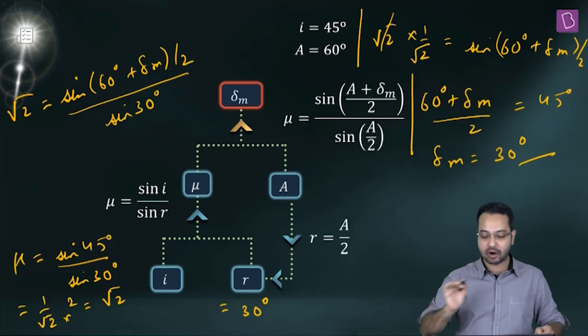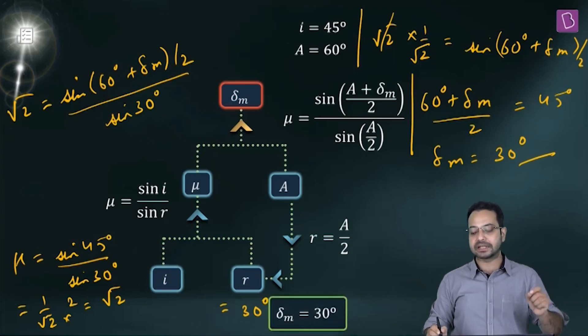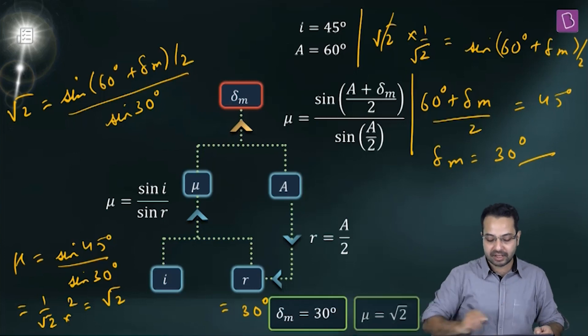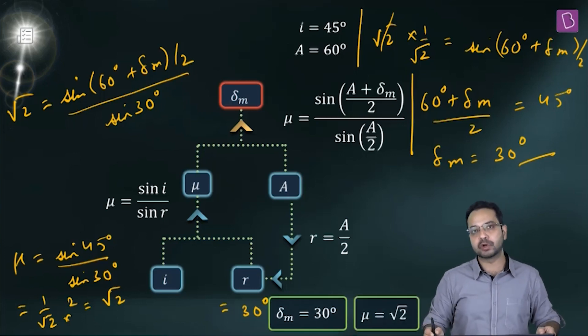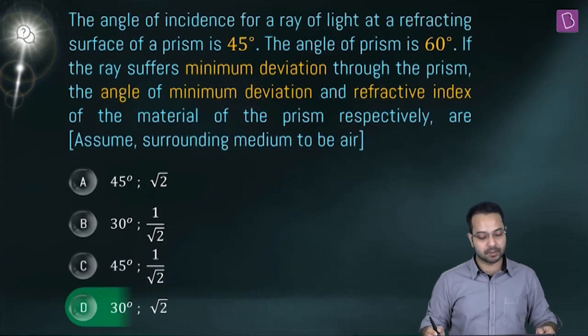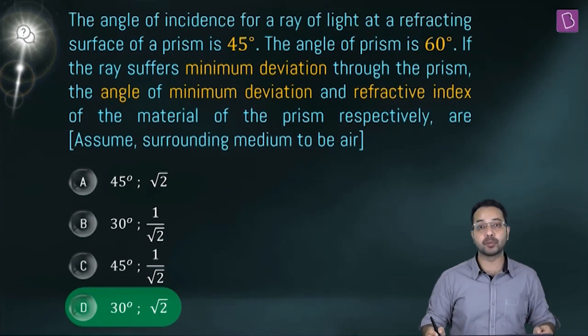So δ_m = 30° and μ = √2 — both answers found. Option D is going to be the right option.